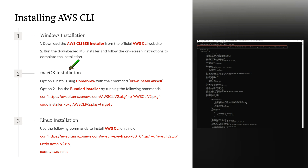The second one is macOS installation, and there are two options. Option one is to install using Homebrew with the command: brew install awscli. In option two, use the bundle installer by running two commands: use the curl command to download the AWS CLI v2 package, then use the sudo installer to install the package.